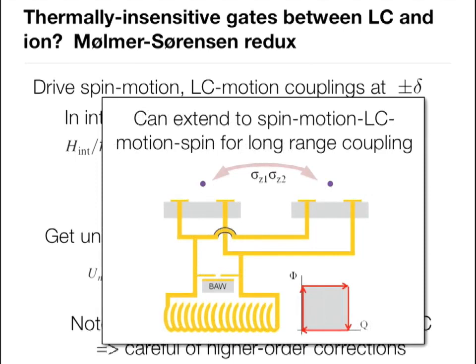You can also drive two more sidebands and go directly spin-to-motion-to-LC-to-motion-to-spin over long range, if two groups of ions share the same tank circuit. This coupling is insensitive to thermal fluctuations of the ion motion on both ends and to thermal occupation of the superconducting inductor. That's where you'd like to be, because many ion trapping groups are pessimistic about 30 mK ion traps at large scale. If you can get the characteristic impedance up to about 6 kilohms, you're looking at 30 kHz coupling rates, and around 10 kHz once all pieces are in place — a nice step up from the one hertz of optical photons.